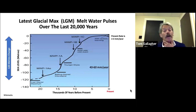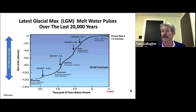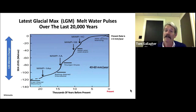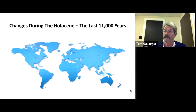Over the past 20,000 years, since that latest glacial maximum, the LGM, sea levels have been rising at 40 to 60 millimeters per year in pulses. But it has slowed to only one-twentieth or less of that rate over the past few thousand years of the Holocene. Let's focus on the Holocene — the period that we're living in — that small island of warmth between the glaciations.